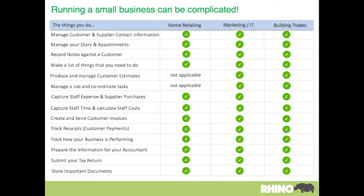Different sectors work in different ways. For example, in the construction trade, getting estimates out and managing jobs is a fundamental part of running those businesses. Whereas marketing and IT companies tend to issue sales proposals and work on projects. And home retailing, for example, doesn't involve estimates or projects — it's more about buying and selling things, managing customers, relationships, appointments, and so on.